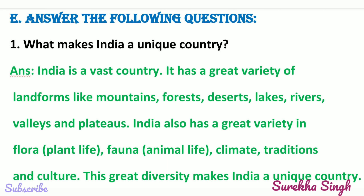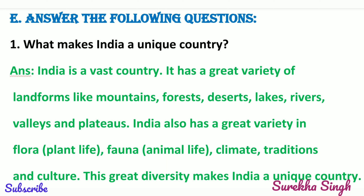Question E: Answer the following questions. Question 1: What makes India a unique country? India is a vast country. It has a great variety of landforms like mountains, forests, deserts, lakes, rivers, valleys and plateaus. India also has a great variety in flora — that is plant life — and fauna, animal life, climate, traditions and culture. This great diversity makes India a unique country.